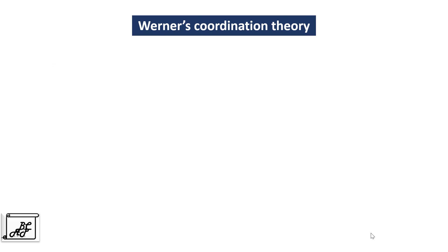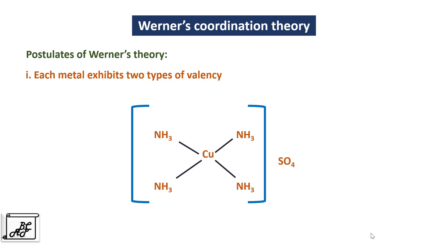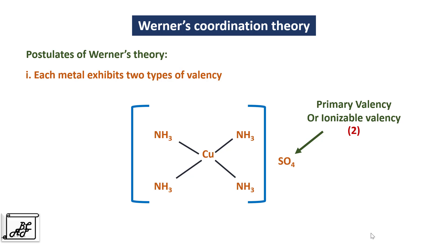Let's move to the postulates of Werner's coordination theory. The first postulate is: each metal exhibits two types of valency. In this complex, copper is the central metal atom and it is coordinated to 4 ammonia molecules, and this Cu(NH3)4 is associated with SO4 outside the square bracket. The first valency is the primary valency or ionizable valency — that is the sulfate ion. We know that on the sulfate ion there is a minus 2 charge, hence the primary valency is 2.